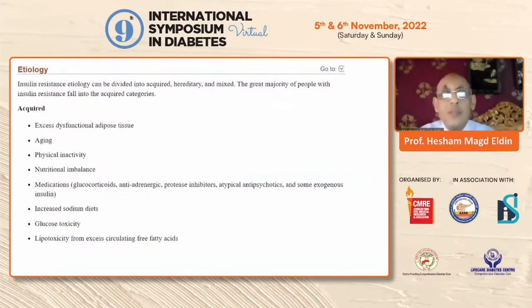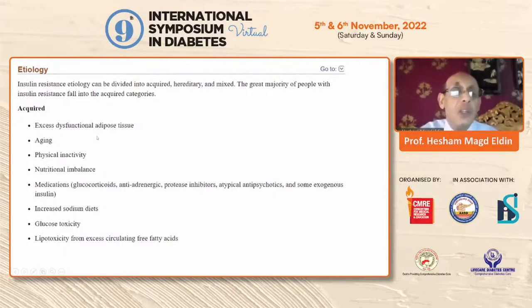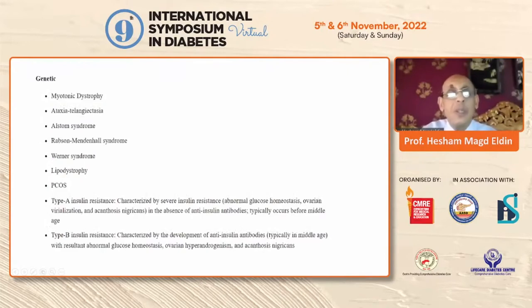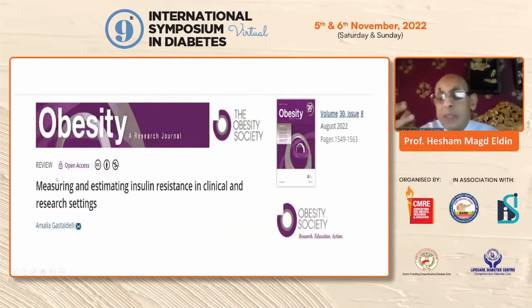Insulin resistance is clinically very important. The causes and risk factors can be divided into acquired, hereditary, or mixed. Most patients fall into the acquired group, due to excess dysfunctional adipose tissue, aging, physical inactivity, nutritional imbalance, some medications, glucotoxicity, and lipotoxicity. There are some genetic syndromes, such as myotonic syndromes, ataxia telangiectasia, lipodystrophy, and polycystic ovary disease, but the acquired form is the most common.